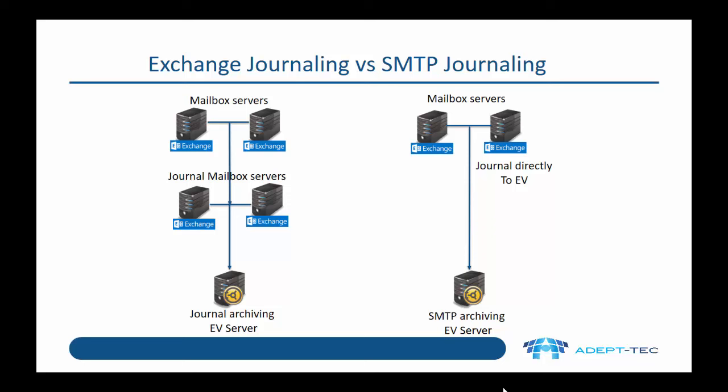On the right hand side we have SMTP archiving or SMTP journaling. In this case our mailbox servers in exchange can journal directly to enterprise vault, which means that we don't need to have the intermediary journal mailbox servers.